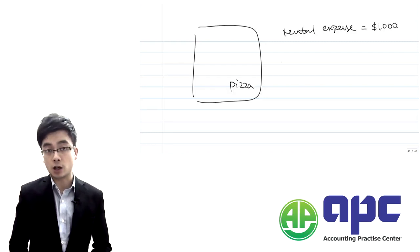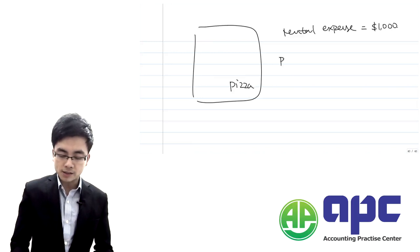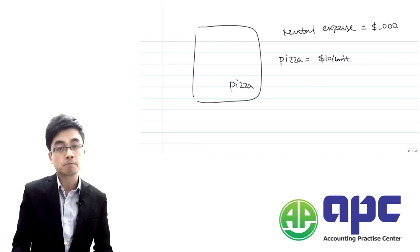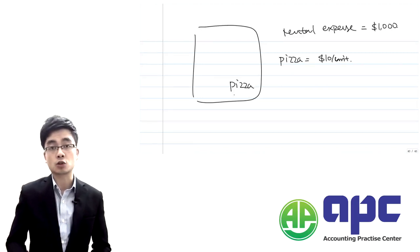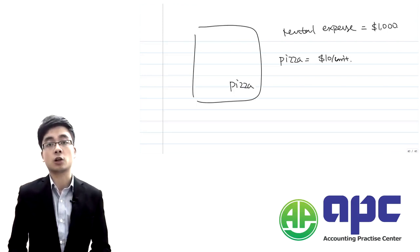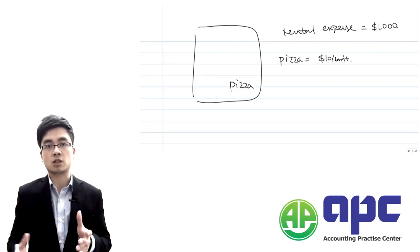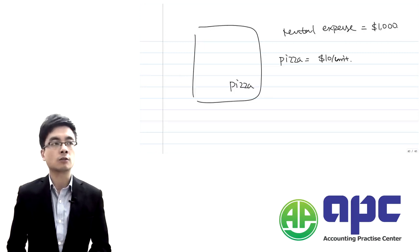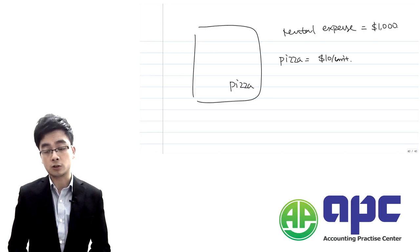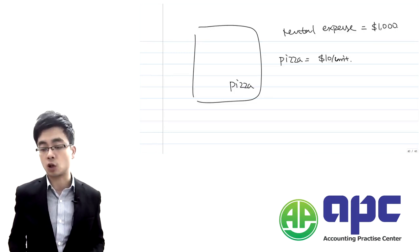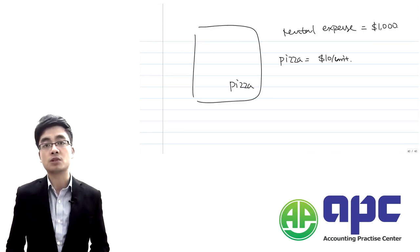You may ask yourself: by selling one pizza, you can make a contribution of $10 per pizza because you charge customers $30 and you've incurred the variable cost — including direct material, such as ingredients, and also direct labor as well as variable overhead — worth $20. So you can make $10 of contribution if you sell one particular pizza.